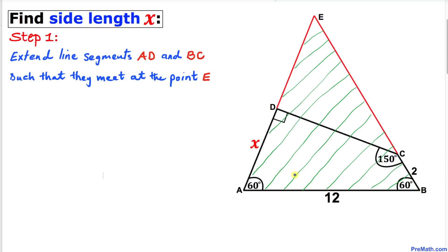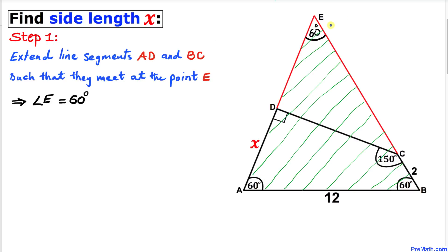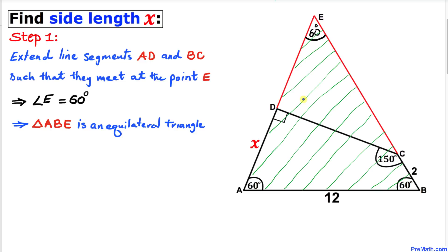Now let's focus on triangle ABE. We know that angle A is 60 degrees and angle B is 60 degrees, so this angle has to be 60 degrees as well, because the sum of the angles in any triangle is 180 degrees. So angle E is 60 degrees.